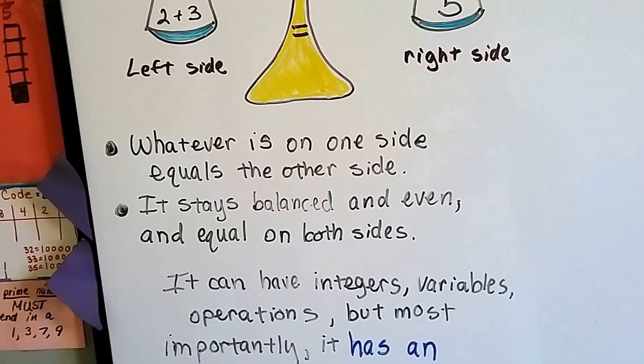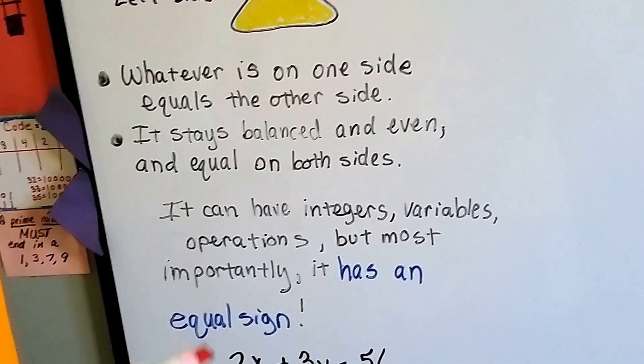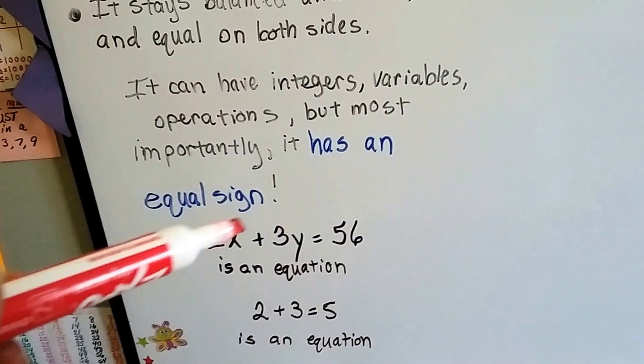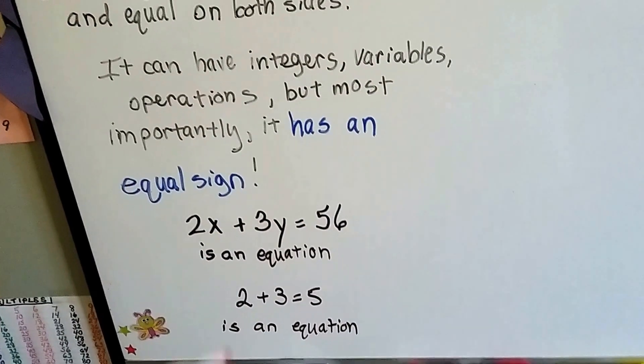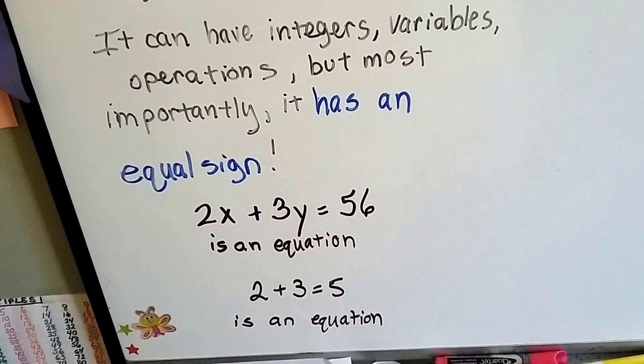It can have integers, variables, operations, but most importantly, an equation has an equal sign. 2x plus 3y equals 56 is an equation. 2 plus 3 equals 5 is an equation.